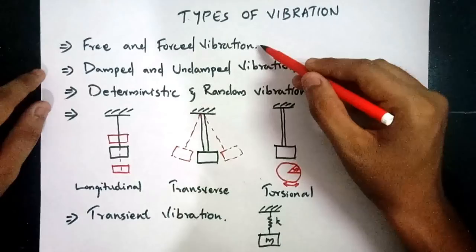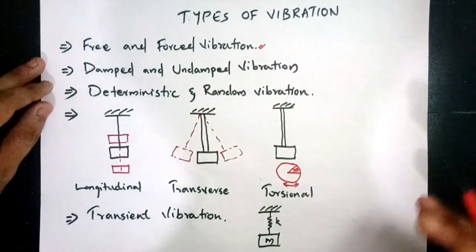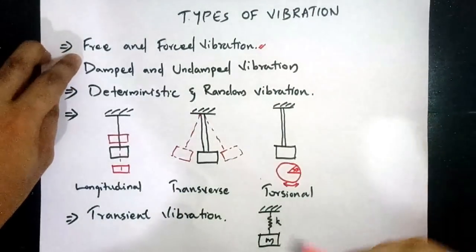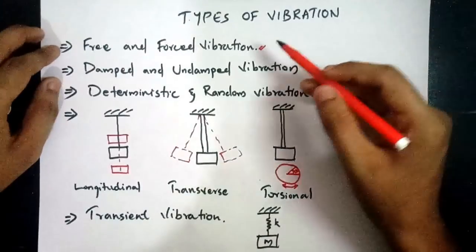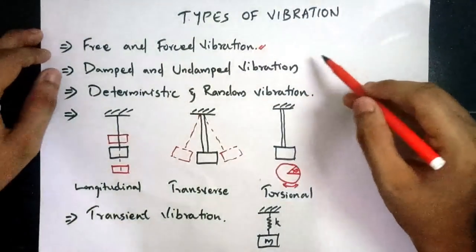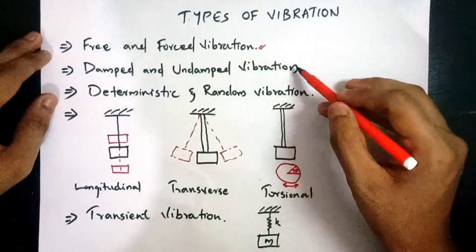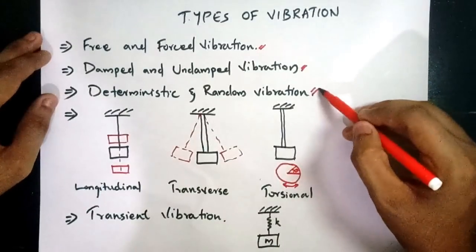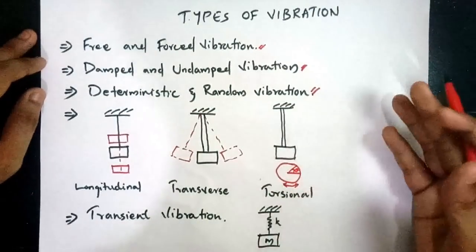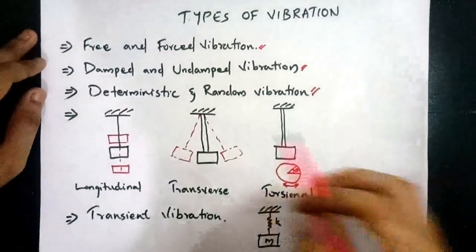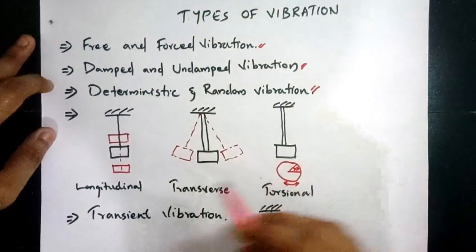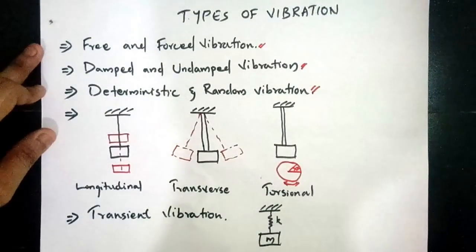The types of vibration are: free vibration — when no external force acts and only an initial displacement initiates the motion; and forced vibration — when an external force continuously acts on the system. When a damper is present, it is called damped vibration; without a damper, it is undamped vibration. Deterministic vibration is when the external excitation is known in magnitude and character; if it is unknown, the system exhibits random vibration. The next classification is longitudinal, transverse, and torsional vibration.